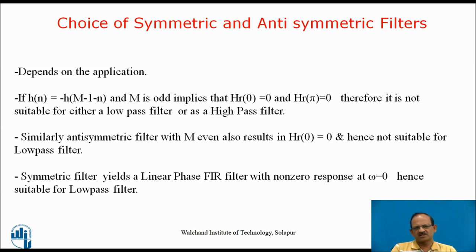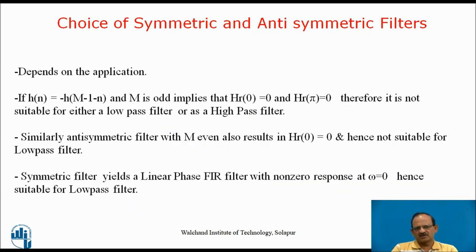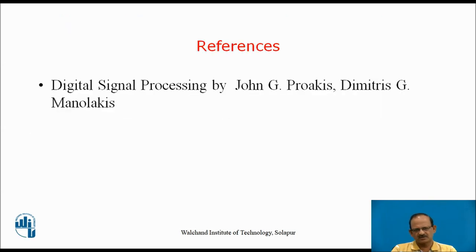The choice of symmetric or anti-symmetric filter depends on the application. For example, if h(n) is anti-symmetric and M is odd, then HR(0) as well as HR(π) are both zero, so it is not suitable as either a low pass filter or a high pass filter. Similarly, anti-symmetric with M even also results in HR(0) = 0, so it is also not suitable for a low pass filter. A symmetric filter yields a linear phase FIR filter with non-zero response at ω = 0 because of the cosine term, and hence it is suitable for a low pass filter. This understanding can be used for designing symmetric and anti-symmetric FIR filters. Thank you.